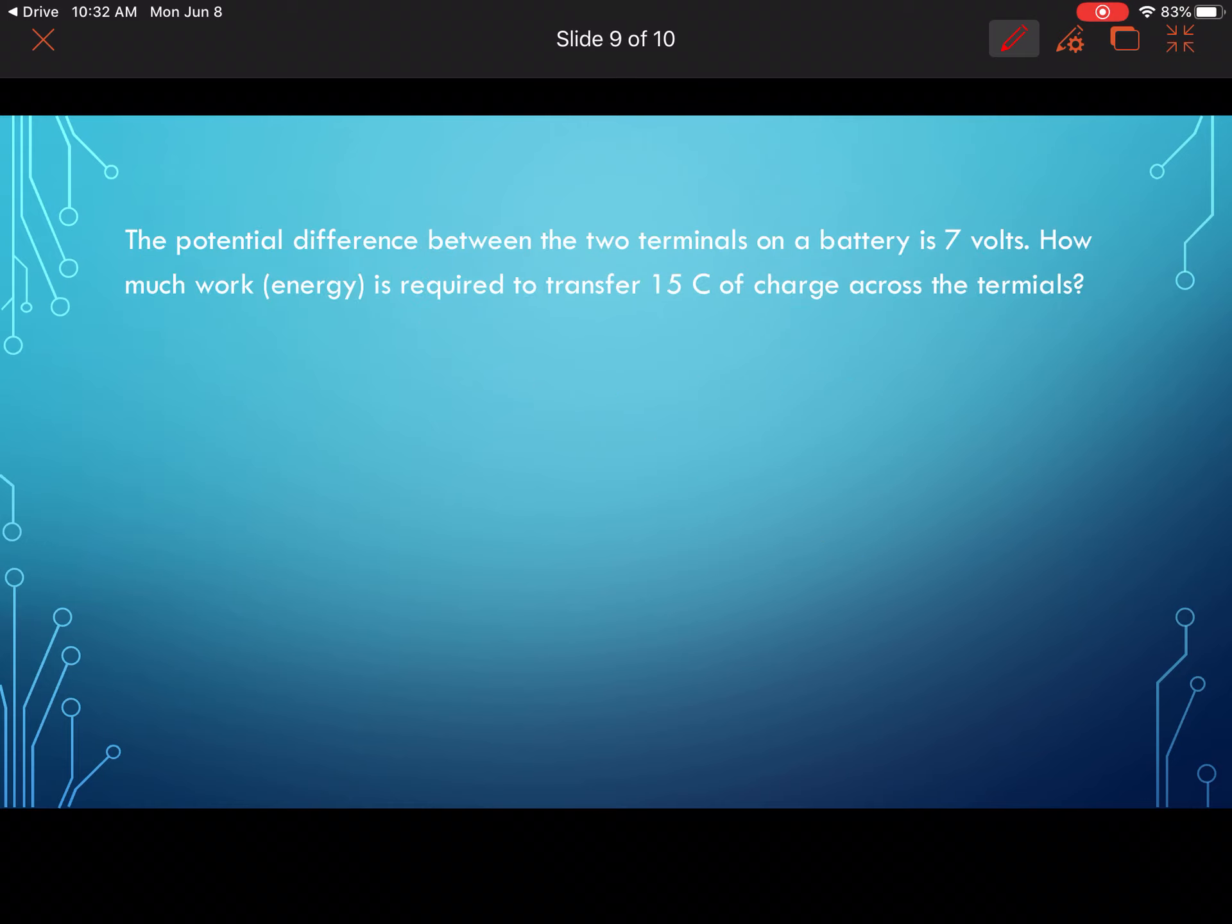Okay, next question here. The potential difference between the two terminals on a battery is 7 volts. How much work energy is required to transfer 15 coulombs of charge across the terminals? So again, we've got E, we've got Q, and we have V. I'm looking here: the potential difference - so this time it tells me the potential difference right away - is 7 volts. So 7 volts. Let's see what else we know: it's required to transfer 15 coulombs of charge, so 15 C here. And the question: how much work or how much energy? So that's my question mark there.